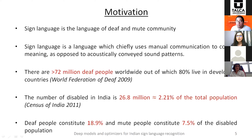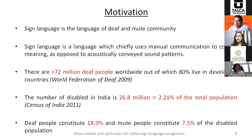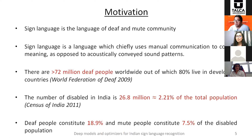Here are the statistics from the World Federation of the Deaf: in 2009 there were more than 72 million deaf people worldwide, and 80 percent live in developing countries. From the Census of India 2011, there are around 26.8 million disabled people in India, of which 18.9 percent are deaf and 7.5 percent are mute.